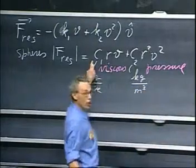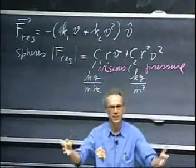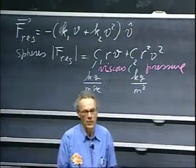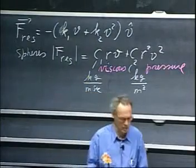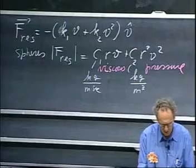The c1 is a strong function of temperature. We all know that if you take tar and you heat it, that the viscosity goes down. It is way more sticky when it is cold. c2 is not very dependent on the temperature.